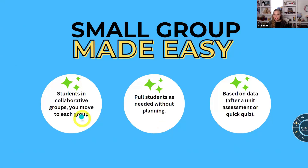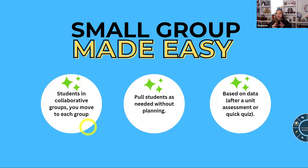So, small group made easy. The first example: students in collaborative groups and you move to each group. Instead of students rotating, you're rotating. They're just working at their table group and you're moving to each group to facilitate, ask questions, clarify understandings and misunderstandings. That can be small group. You can also make them ability groups intentionally to meet individual needs, or mixed-level groups where students can help each other — that's my favorite.